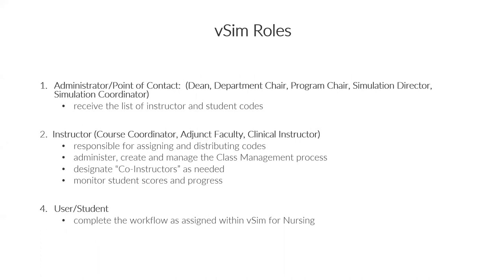In the implementation of VSIM, there are different roles required in launching the program. The first is the administrator or point of contact — this could be your dean, department chair, program chair, simulation director, or simulation coordinator — somebody who is the single point of contact to receive the list of instructor and student codes. Instructors are responsible for assigning and distributing codes, creating and managing the class management process, designating co-instructors, and monitoring students' scores and progress. Note that the administrator or point of contact could indeed also be an instructor.